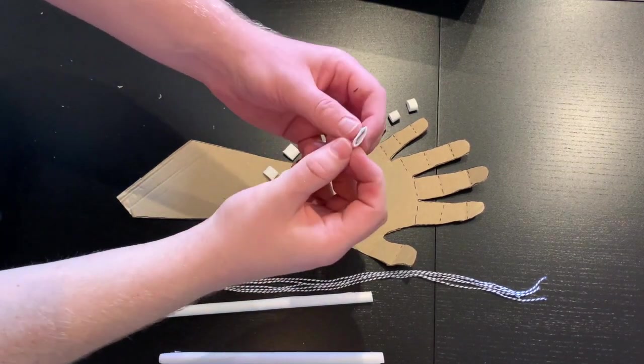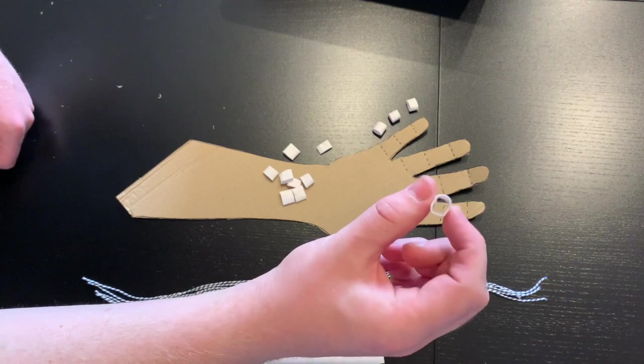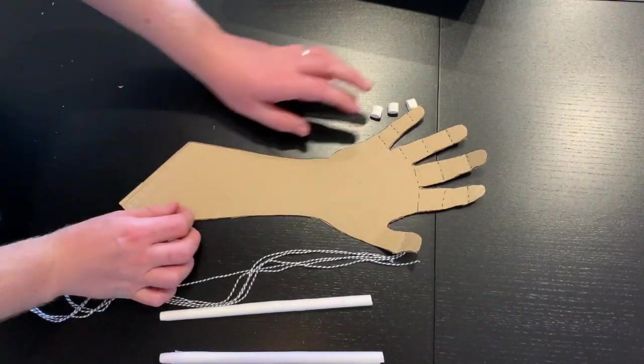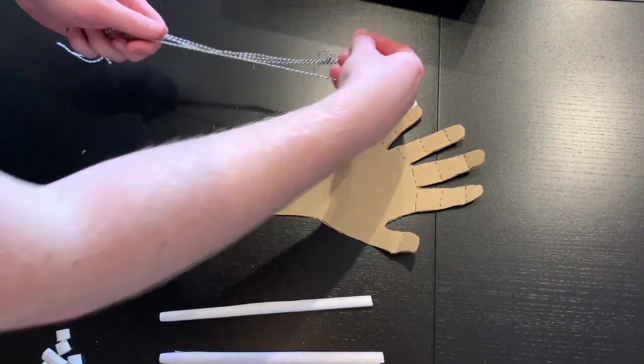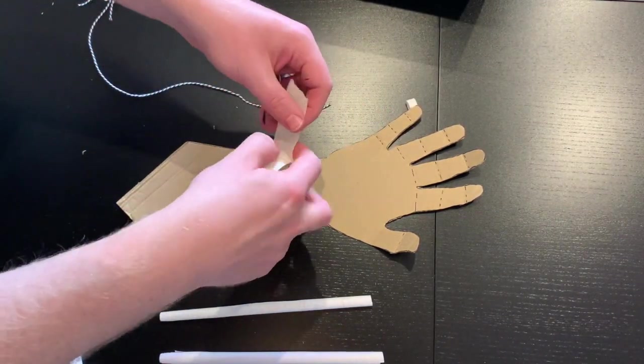I want to do this for all of the fingers. Some of your little straws might have flattened when you cut them, just squeeze them on their flat edge and they'll come nice and round again. I'm going to put these aside for now and I'm going to take my pieces of string.